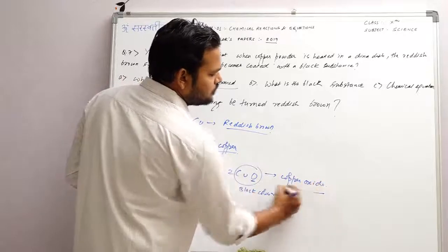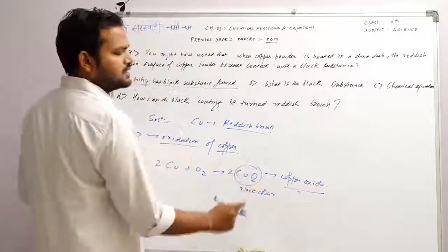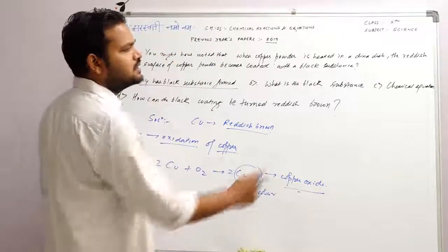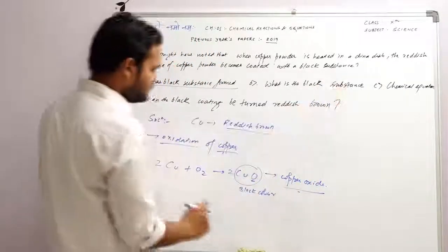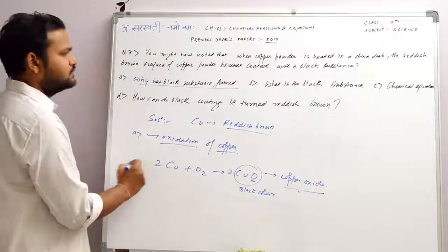The black substance is copper oxide. Copper oxide is the black substance. This is answer B. And C is the chemical equation.